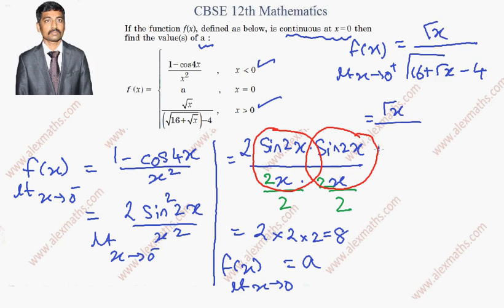And this term we have to multiply the conjugate. So let me copy the term as it is first, then the conjugate of this denominator is nothing but root of 16 plus root x plus 4, because the denominator is having minus 4, so I'll change the sign. Even here I have to multiply with root of 16 plus root x plus 4.